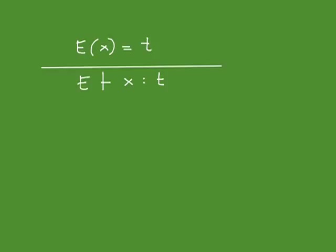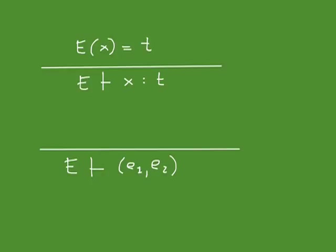Because variables can occur anywhere, you always need to carry around your type environment. Let's look at the rule for pairs. Given type environment E and a pair (e1, e2), the pair should get a product type t1 × t2. You find this product type by finding the types of the components: if e1 has type t1 and e2 has type t2, then the pair gets the product type t1 × t2.